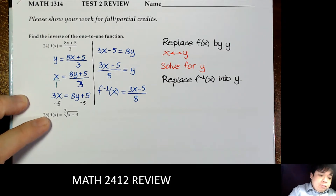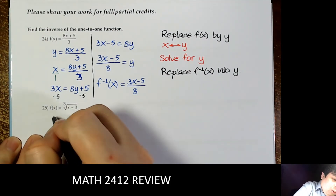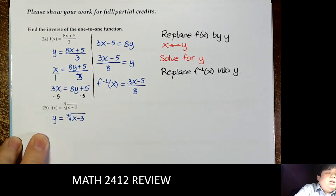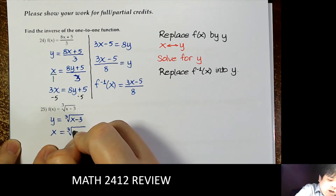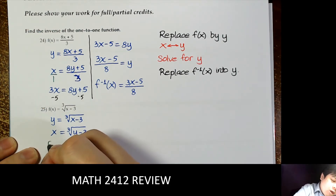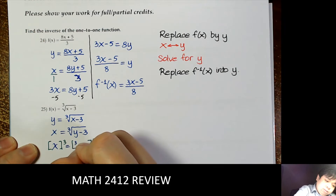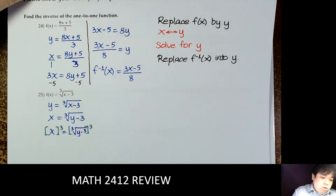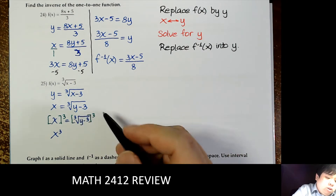Next we'll do the same thing with the cube root of x minus 3. First we replace f(x) by y, then interchange x and y — y becomes x and x becomes y. Then we solve for y by cubing both sides. When we cube both sides, we don't need to check the answer — only with square roots. Cube root is not an even root, so we don't need to check.